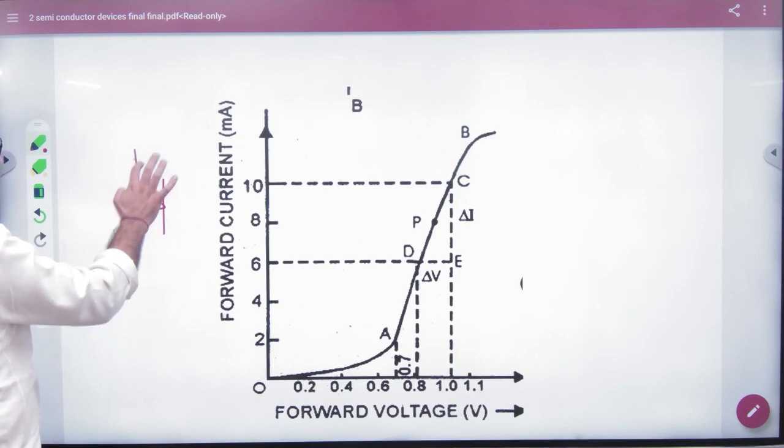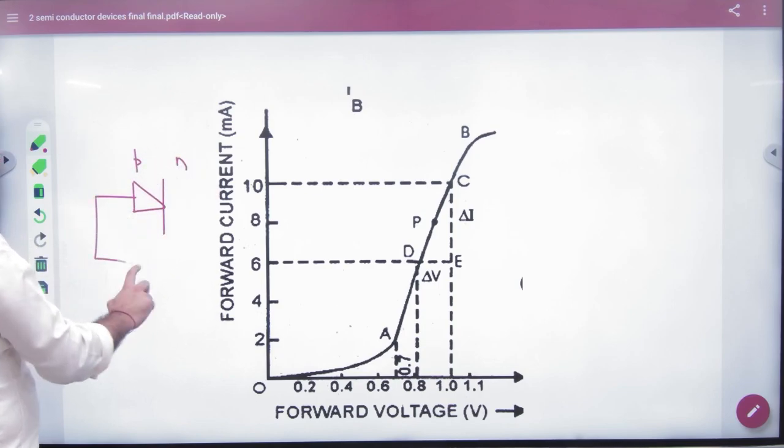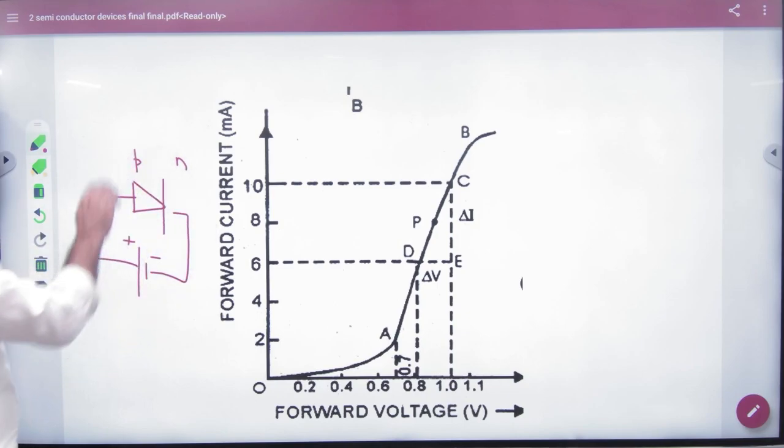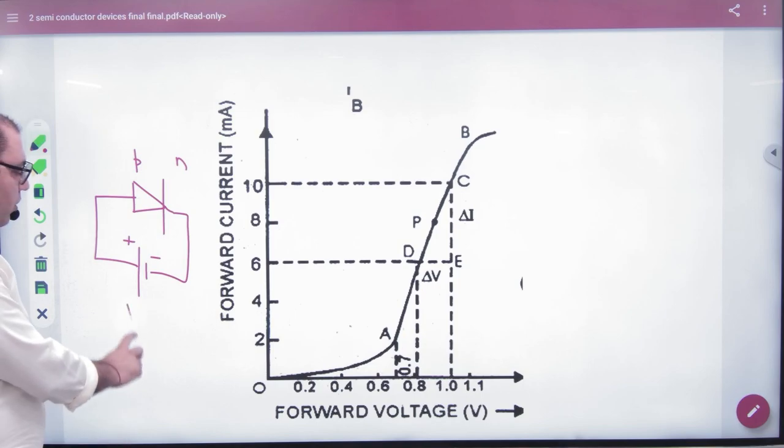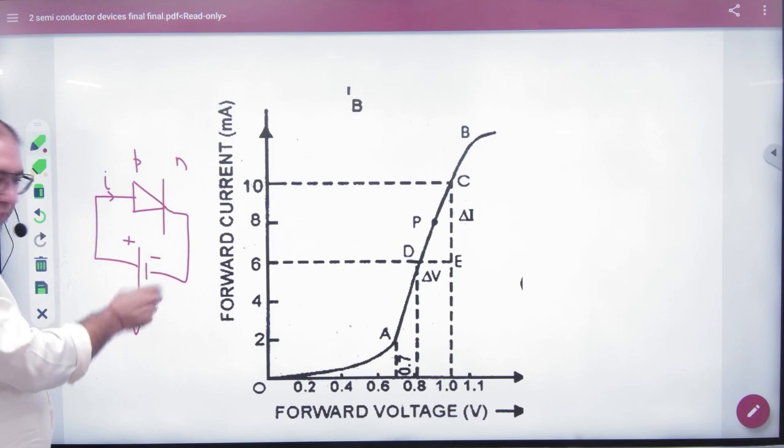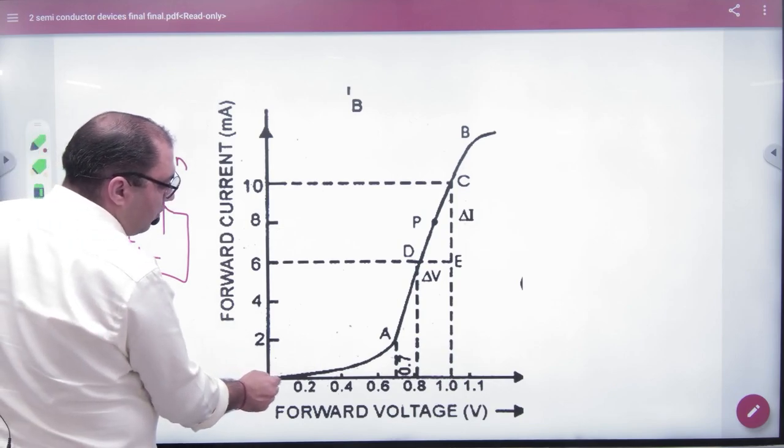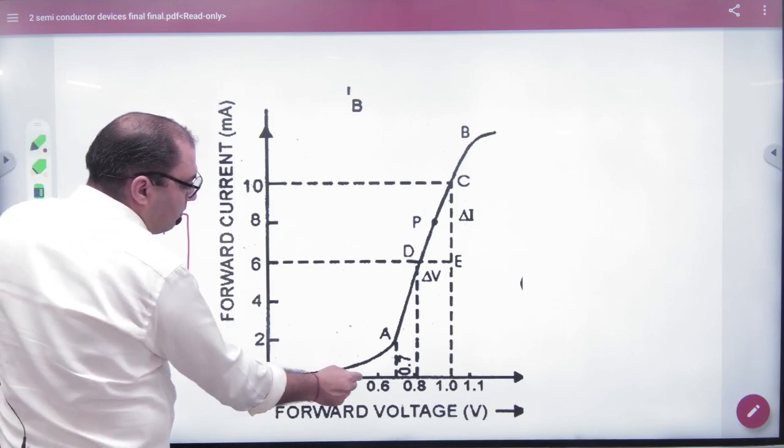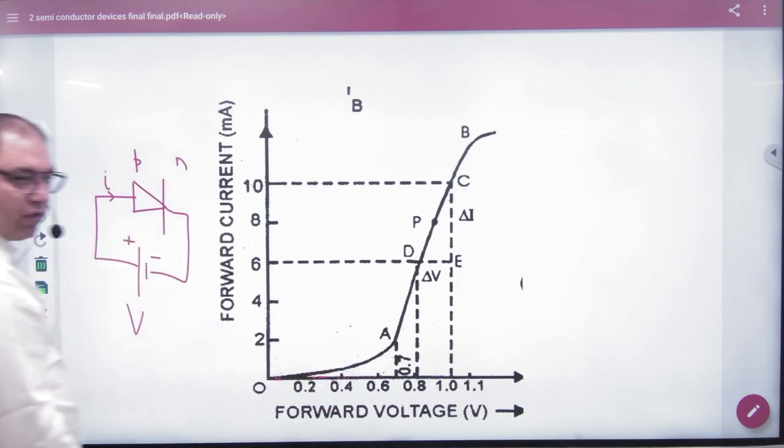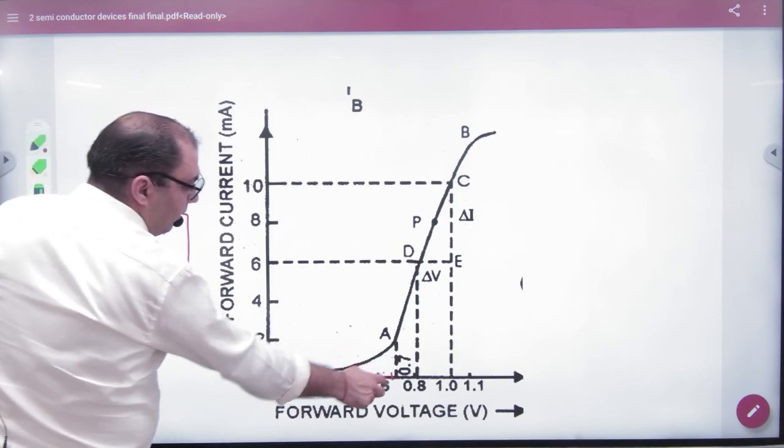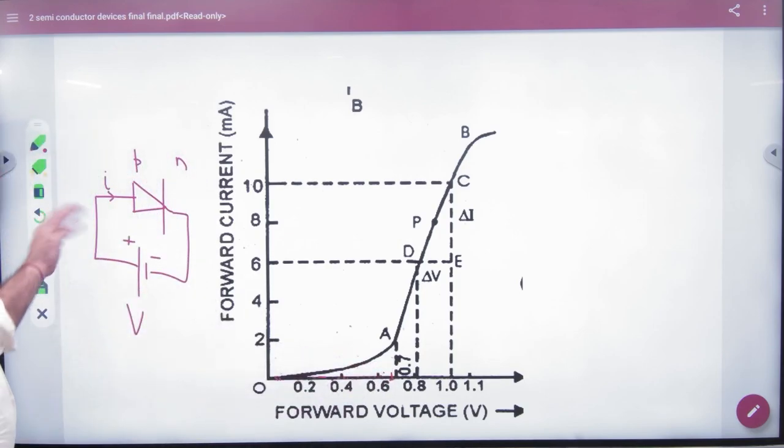If I call the PN junction or PN diode, such that this is P and this is N, and I put the battery positive terminal to P and negative to N. I put one thing together, something like that. And I increase voltage and see what current will change. I increase the voltage, the current will change as well. The current will increase.